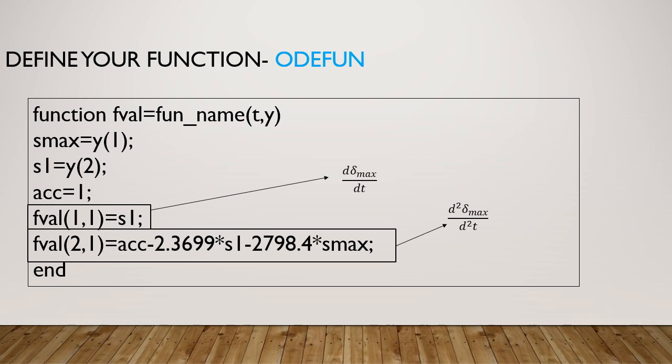Now we have to define our function to solve our ordinary differential equation. We have fval, the output we have to define it in a column vector form. The first column, first row element is s1.